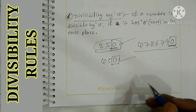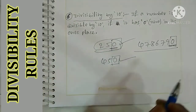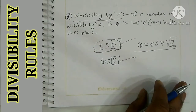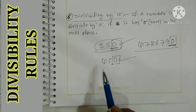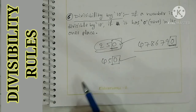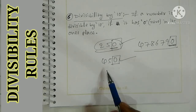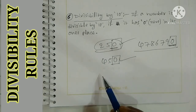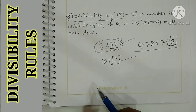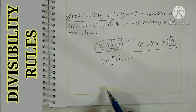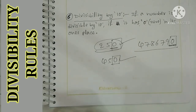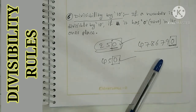Divisible by 10. Okay, these are the divisibility rules. In the next video we will check exercise 3.1. It is easy to try. You can choose. Okay.